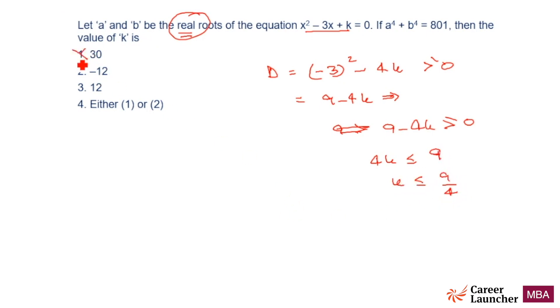So k cannot be this, k cannot be this, because both of them are greater than 9 by 4 or 2.25. So that means the only option is here. Choice elimination is extremely important. Use the basic concept that it has to be real roots. If it is real roots, that means discriminant should be greater than or equal to 0. So eliminate choices using this simple concept.